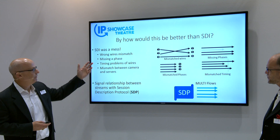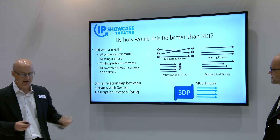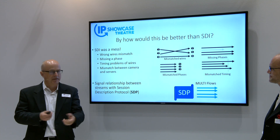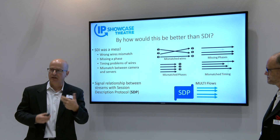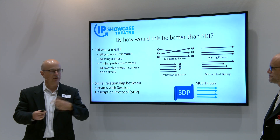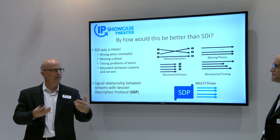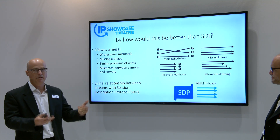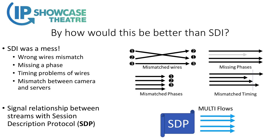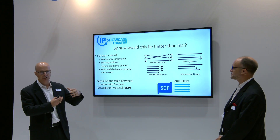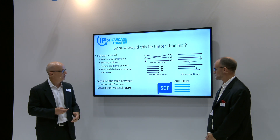The issues with SDI, as James explained, are that with those SDI ports there's nothing to tell you about the flows. You can label things, but in a truck environment you're changing things from show to show. All these cool features that you can automate — the same camera can do UHD, SD, or super slow, and you can configure it with a button — but the wiring is all manual. Errors happen and you can get mismatches all over the place. What we can do with IP is use the Session Description Protocol, an IETF standard, to describe each flow and declare that they are grouped together.